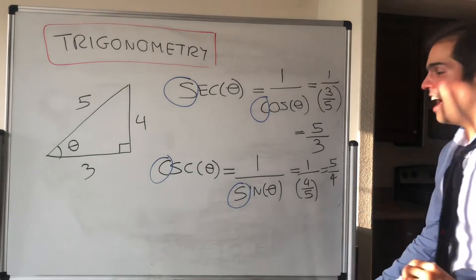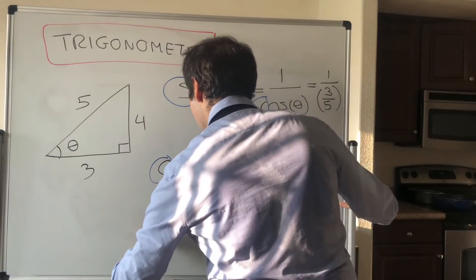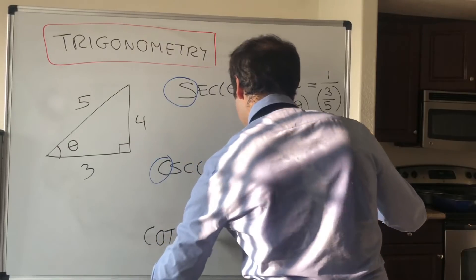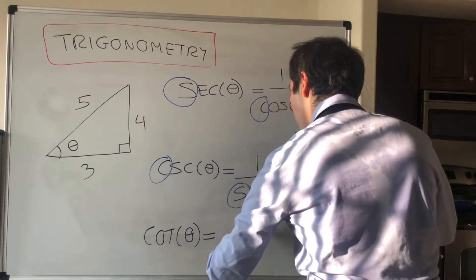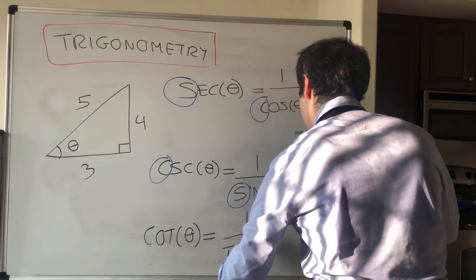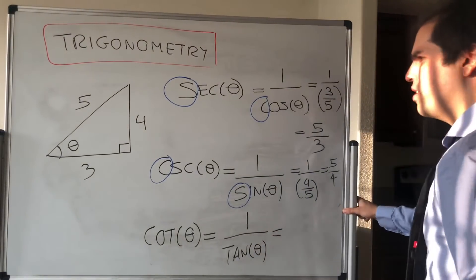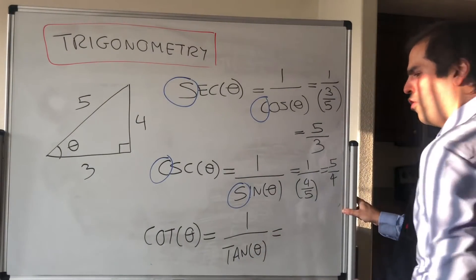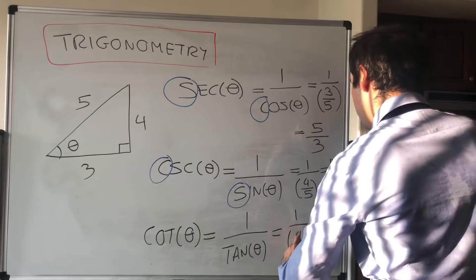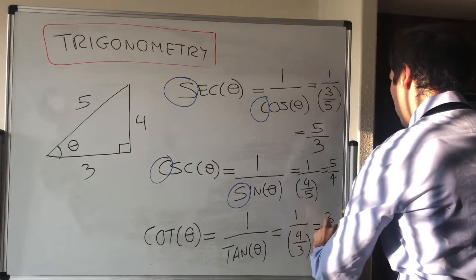And lastly, there is cotangent, which is just 1 over tangent. Tangent was 4/3, so it's 1 over 4/3, which is 3/4.